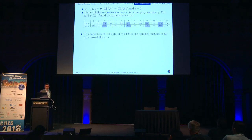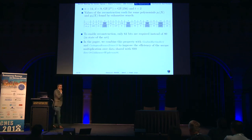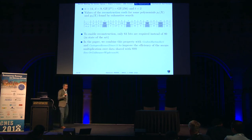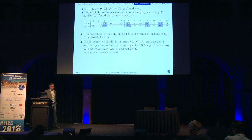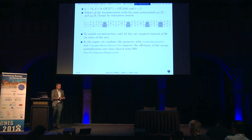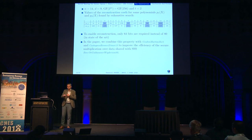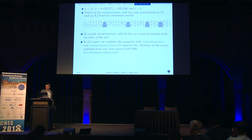I will not have time to discuss how we can apply this to get an efficient multiplication over data shared with Shamir's scheme, but essentially the idea is quite simple. When representing the shares of data, you don't need to store the shares corresponding to zero coordinates, to zero projections. So at least you save memory in the representation, and we show in the paper that you can use this property to improve multiplication over data shared with Shamir's scheme.